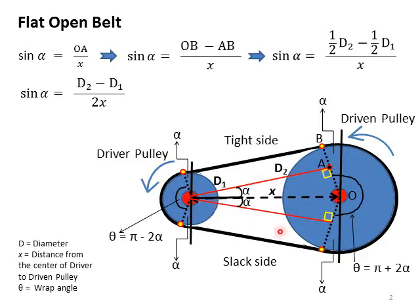The bottom right-hand side figure should be familiar, as we have discussed it many times in the previous two lectures. For convenience, I will repeat the basic terminologies one more time. We have a driver shaft with the driver pulley in blue mounted on the red driver shaft, a driven shaft in red with the blue driven pulley mounted on it, and a black flat belt looped around both pulleys to transmit power from the driver side to the driven side.